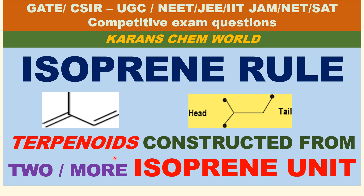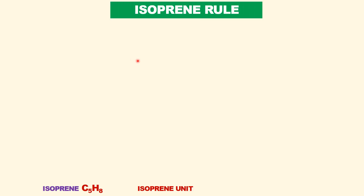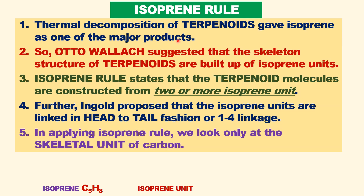Terpenoids are important natural products. They are made up of two or more isoprene units. Let us now see what the isoprene rule is. On heating terpenoids, it gave isoprene — two or more isoprene — as major products.